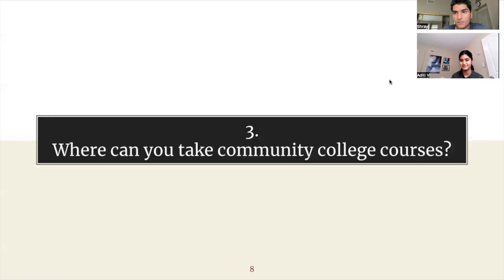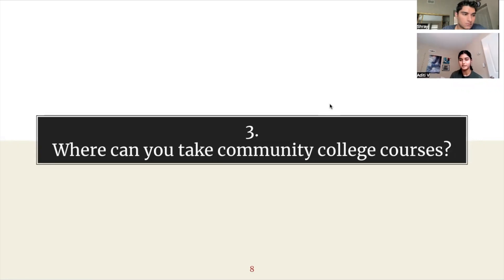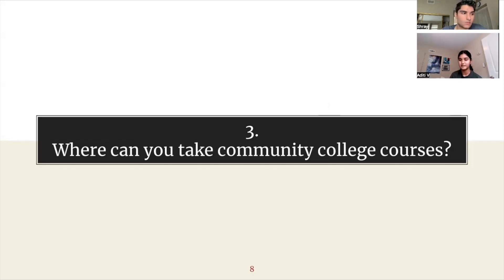So where can you take community college courses? You can take community college courses as a high schooler in many different settings. You could take it in person at the college. There are many community colleges in the Bay Area, some of which include Chabot College, De Anza College, and West Valley College. There is also an option to take online courses, which is popular among high school students. In-person classes have fewer distractions and make class discussions easier, but online classes are more convenient and have greater accessibility for students who can't make the commute or have other commitments. The last option is to take community college courses at your high school, but that's only in the case of dual enrollment.